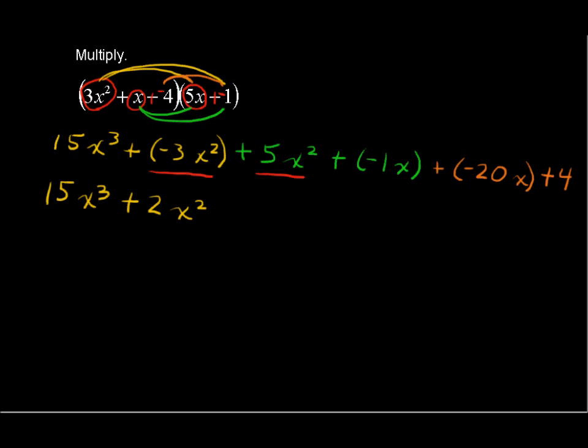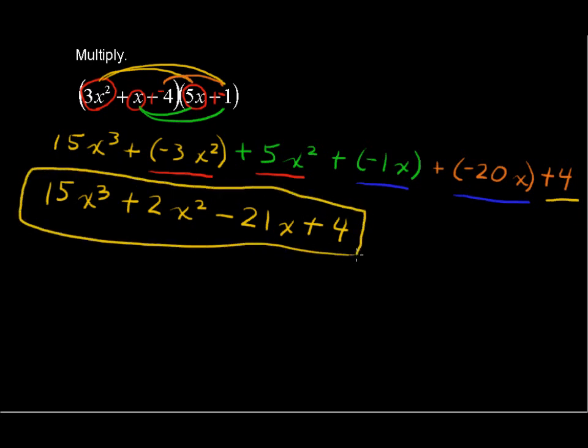We can also combine the x terms: negative 1x and negative 20x. That will give us negative 21x. Lastly, this constant term of 4. There is no other constant term, so 4 will stay by itself. So we can write positive 4. So our final answer will be 15x cubed plus 2x squared minus 21x plus 4.